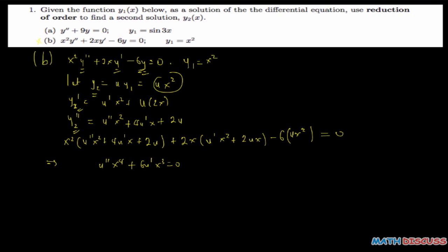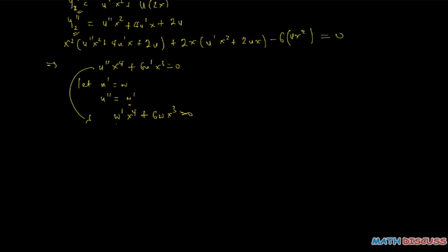We recognize this as a second-order ODE, so we reduce it to a first-order ODE by substituting u prime equals w, so u double prime equals w prime. Substituting, we have w prime x to the power 4 plus 6w x cubed equals 0.